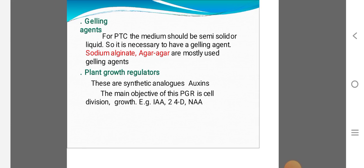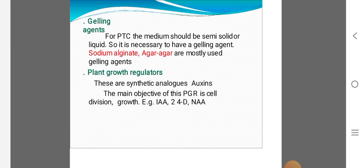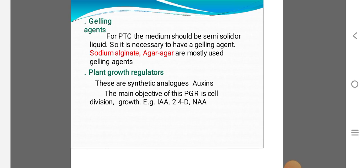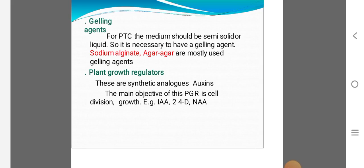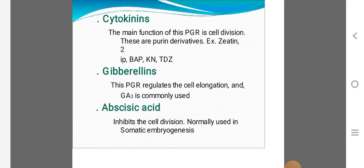Plant growth regulators. They are nothing but phytohormones. They are synthetic analogs, auxins. Auxins, the main objective of this plant growth regulator is cell division. Example: IAA, indole-3-acetic acid; 2,4-D, 2,4-dichlorophenoxy acetic acid; NAA, naphthalene acetic acid are auxins.